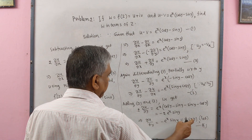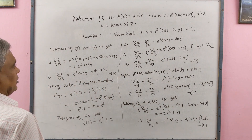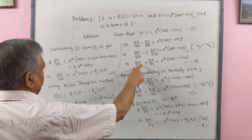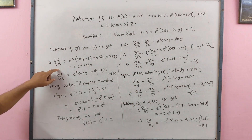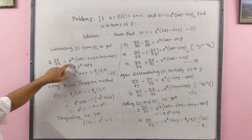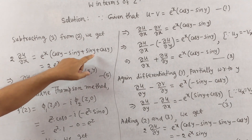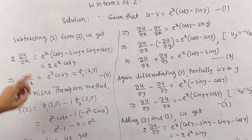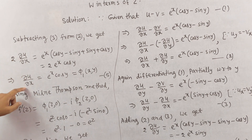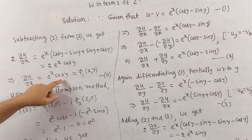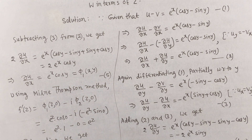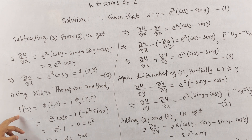Now subtracting equation 3 from equation 2: on the left, 2·∂u/∂x remains. On the right, eˣ(cos y − sin y + sin y + cos y) = 2eˣ cos y. Dividing by 2: ∂u/∂x = eˣ cos y. We consider this φ₁(x,y).